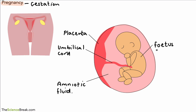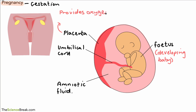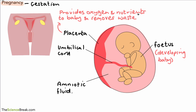Let's make a note of these various things. The fetus is the developing baby. The placenta has an important role — it provides oxygen for the fetus and other nutrients as well, nutrients from the food that the mother has eaten. It also has the job of removing any waste produced by the baby, so it provides oxygen and nutrients to the baby and removes waste.